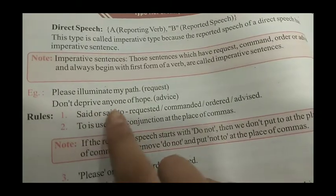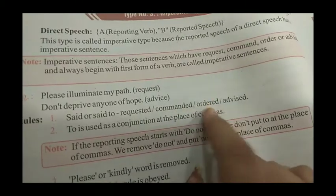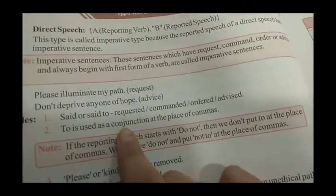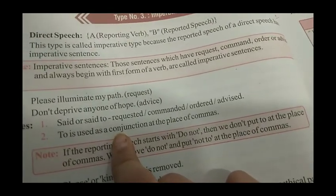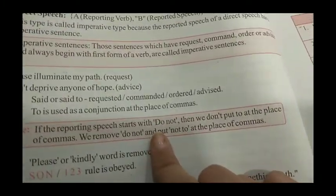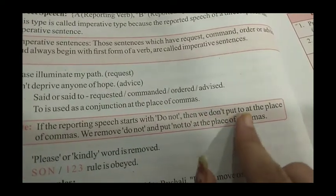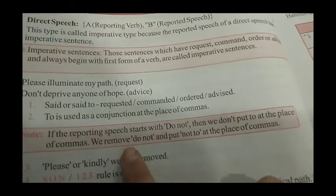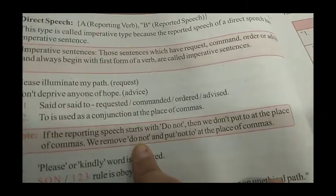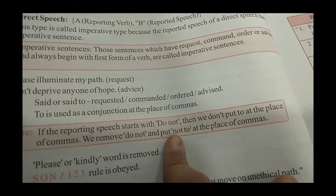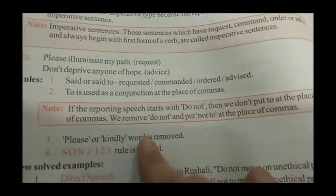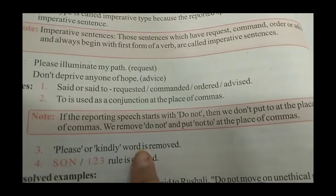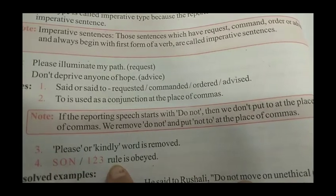Rules: Said और said to की जगह हम requested, commanded, ordered या advised use करते हैं। To is used as a conjunction at the place of comma. अगर reported speech do not से start हो रही है, then we don't put 'to' at the place of comma — instead we remove 'do not' and put 'not to' at the place of comma। Please और kindly word remove हो जाता है। S.O.N. 123 rule is obeyed.